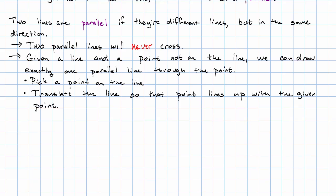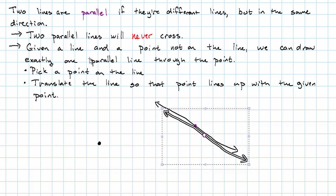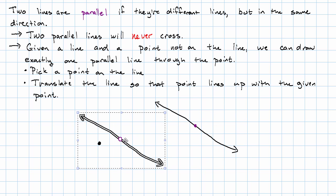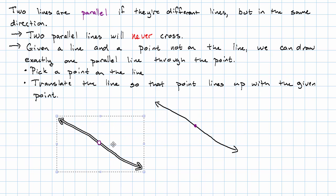What does that look like? Here's a line and here's a point that isn't on the line. I pick a point that's on the line and then I make a copy of the line and translate it so that the point I picked lines up with the point that I was given. And there we go. Parallel lines.